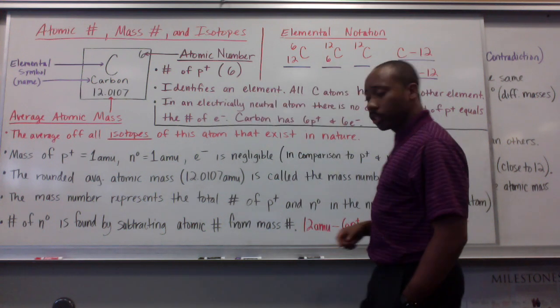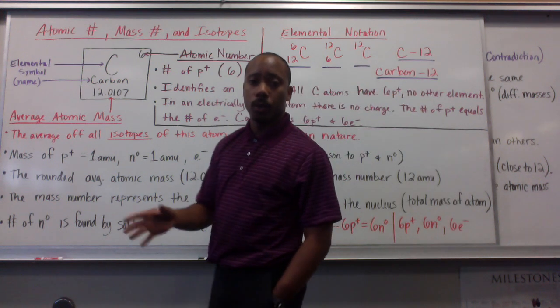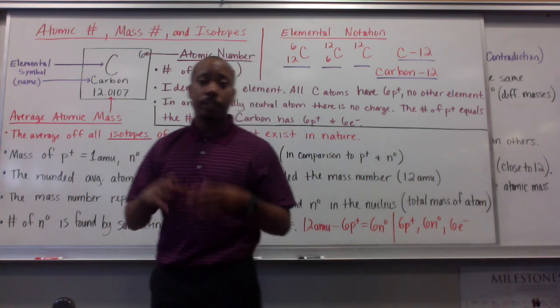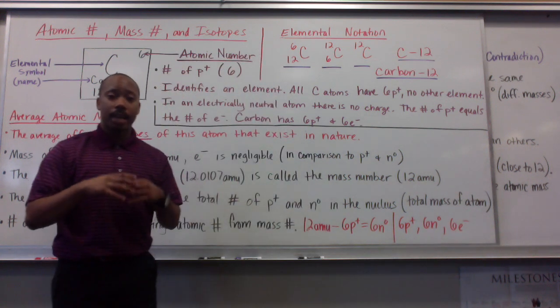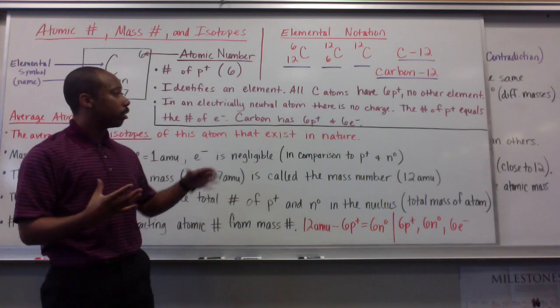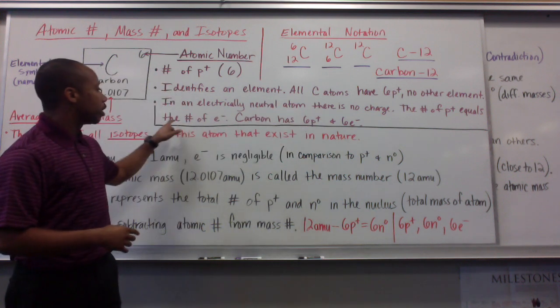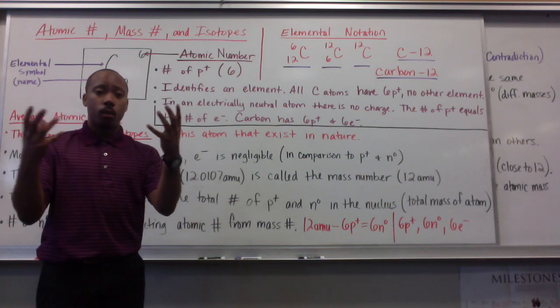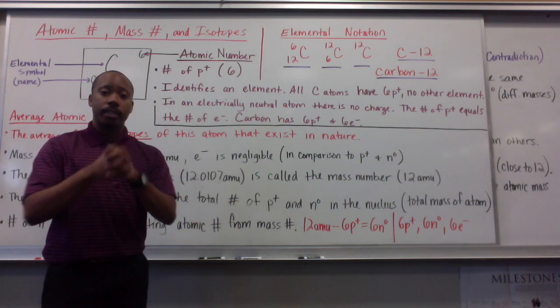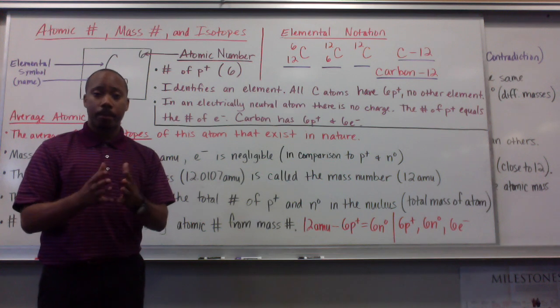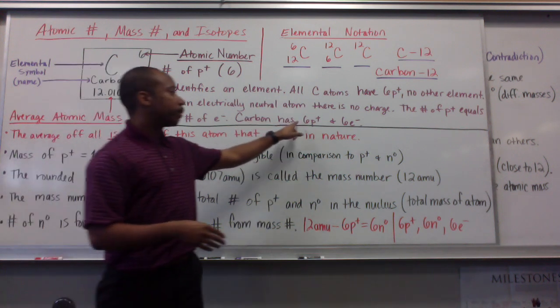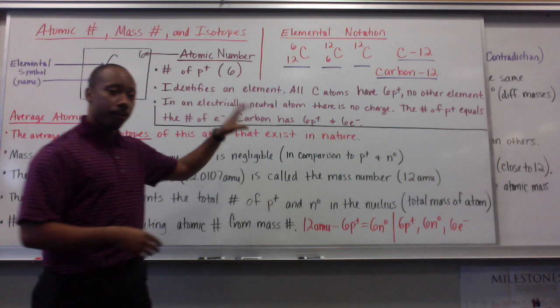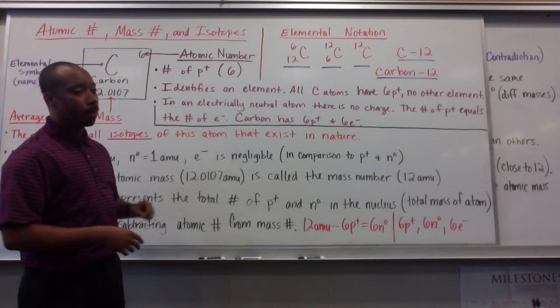So, this identifies the element. All carbon atoms have six protons. No other element will. In an electrically neutral atom, meaning an atom that has no charge, the number of protons equals the number of electrons. Protons are positively charged. Electrons are negatively charged. When they're in equal amounts, it creates an electrically neutral system, or atom. Carbon has six protons and six electrons. That information is given by the atomic number.